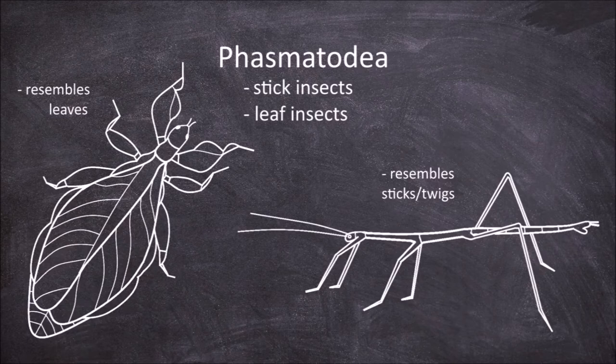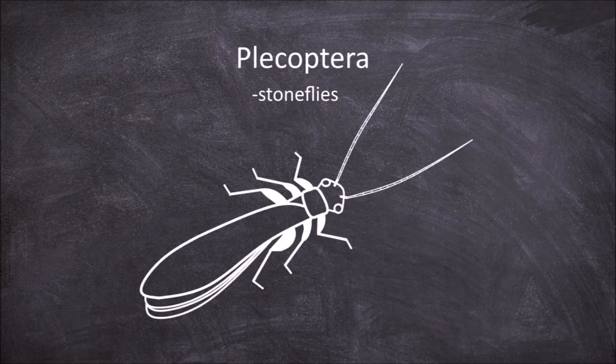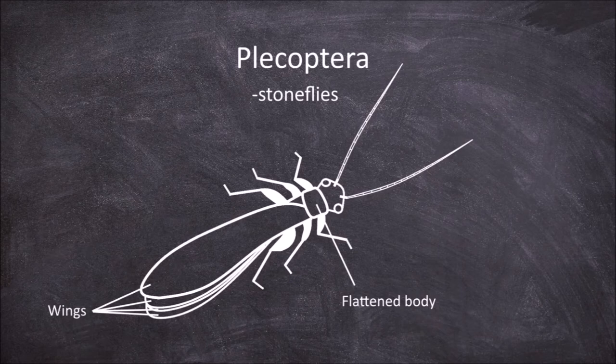The next order is the Plecoptera, which are the stoneflies. They have flattened bodies with wings folded horizontally over the back of their bodies. The tarsi on the hind legs are segmented into three segments and they have long filiform antennae.